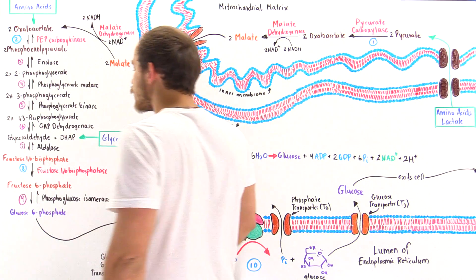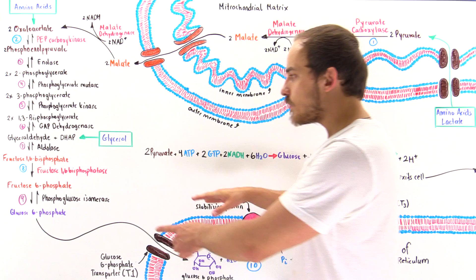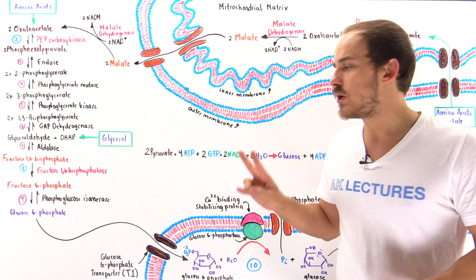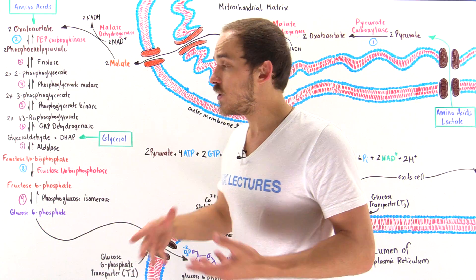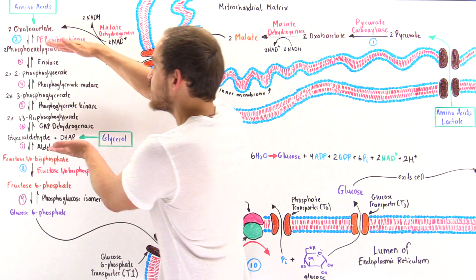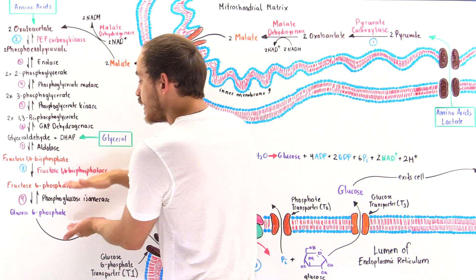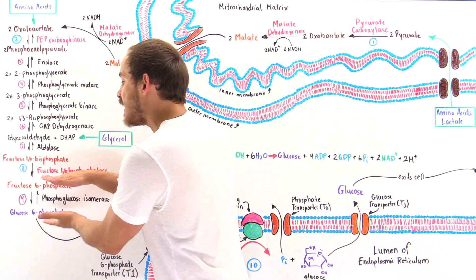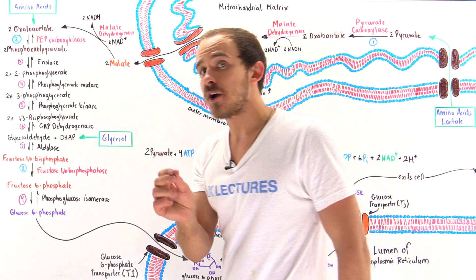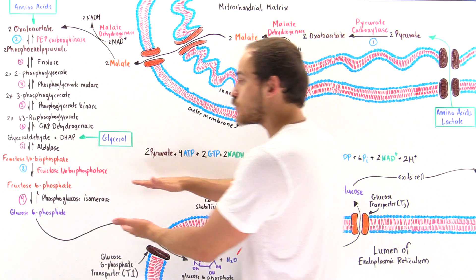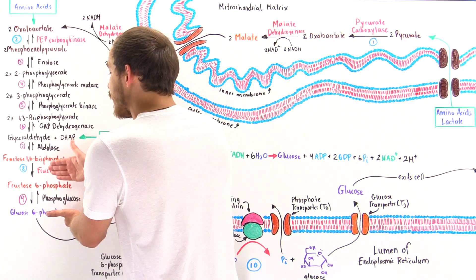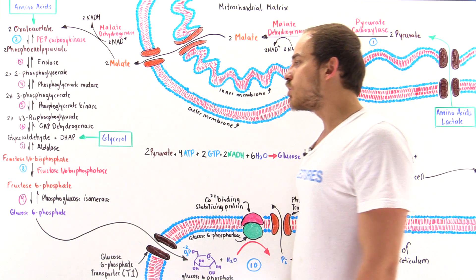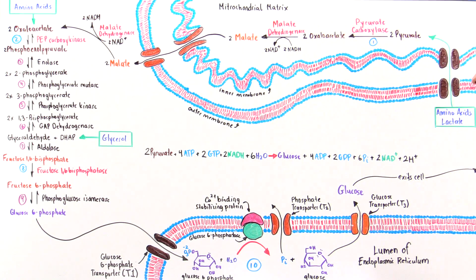Once we form that fructose 6-phosphate, step nine is simply the reverse of step two in glycolysis. Once again, this step is reversible and the Gibbs free energy is very close to zero, so this reaction is at equilibrium and will spontaneously take place, forming glucose 6-phosphate.